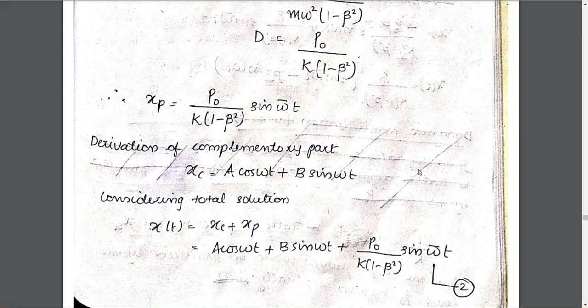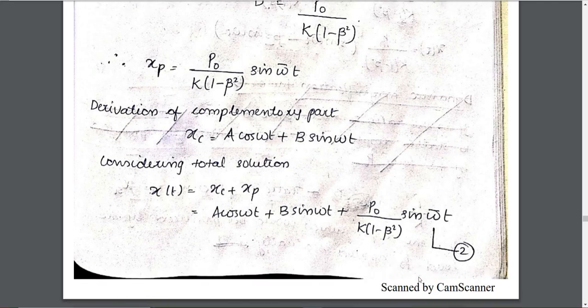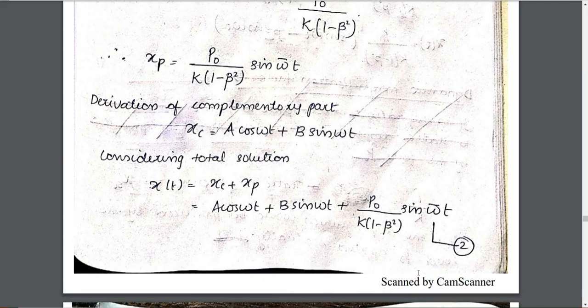We combine the particular solution with the complementary part to get the total solution — this is equation number 2. We then apply the initial boundary conditions, setting t equal to 0.